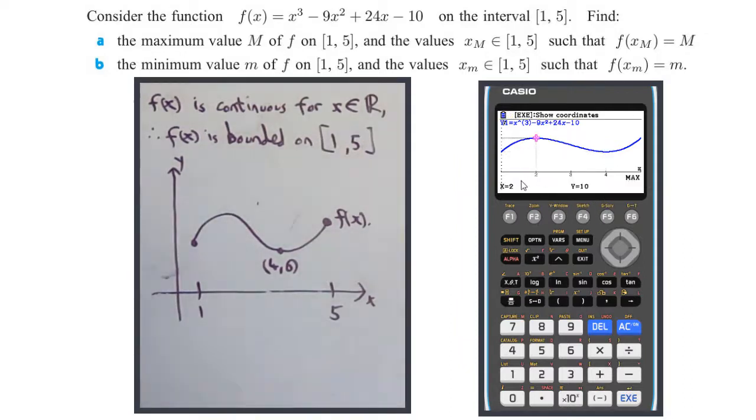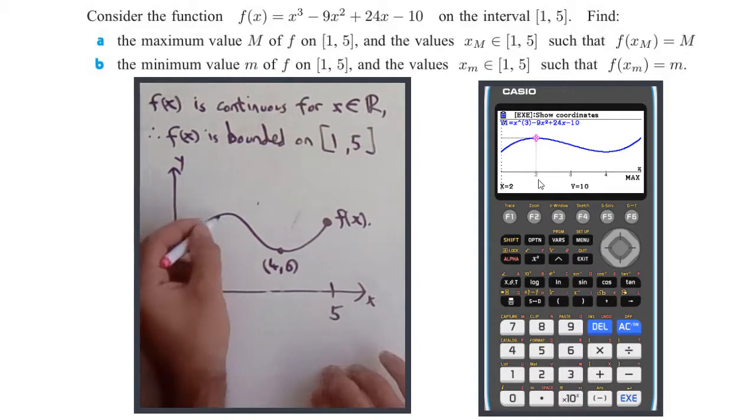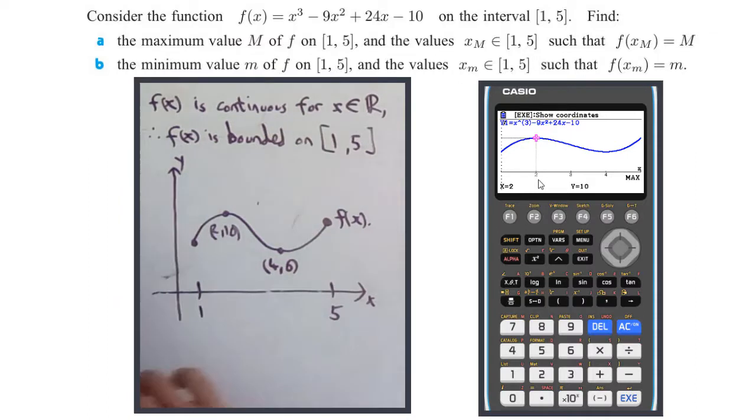Now for this maximum up here - shift-G-solve for maximum. That's at (2, 10).